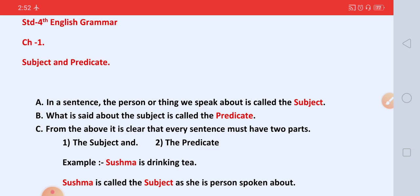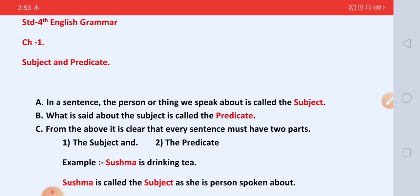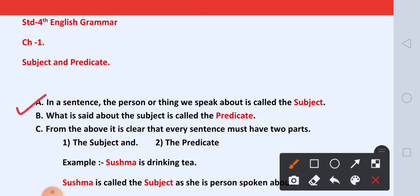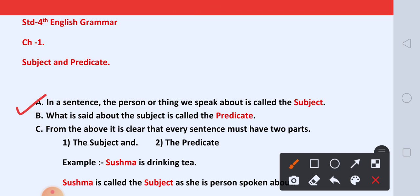Students, do you know what is Subject and Predicate? In a sentence, we have two parts: Subject and Predicate. So let us learn about Subject and Predicate. In a sentence, the person or thing we speak about is called the subject. Sentence mein, kisi person or thing ke baare mein hum batate hai — usko kya bolte hai? Subject.